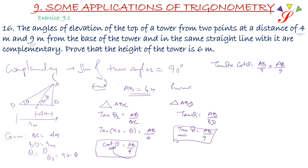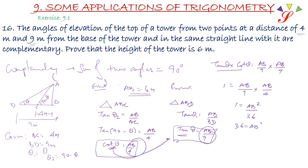Now, tan theta times cot theta equals (AB upon 9) times (AB upon 4). Since tan theta times cot theta equals 1, we get 1 equals AB squared upon 36. So 36 equals AB squared. Therefore AB equals root of 36, so AB equals 6 meter.